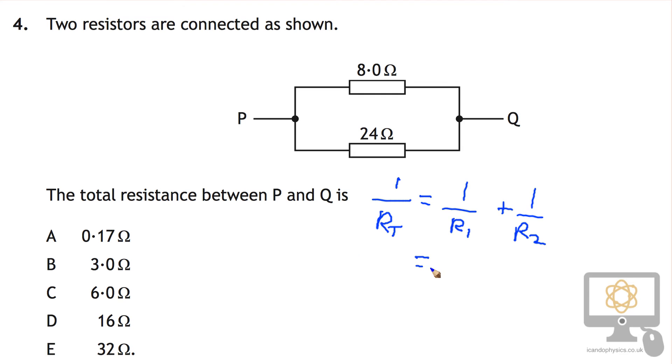So what is that? Well that's 1 over 8 plus 1 over 24. Now the easiest way to do that is to find the common denominator which is 24. So that's going to be the same as 3 over 24 plus 1 over 24.